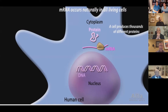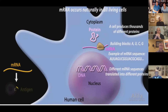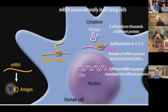mRNA consists of four basic building blocks called A, U, C, and G. The information it carries is the sequence of these letters. RNA vaccines contain mRNA strands that have the information for making the viral antigen—usually a viral spike protein. Once inside the body's cells, the mRNA is translated into protein, the antigen, by the same process the cells use to make their own proteins.